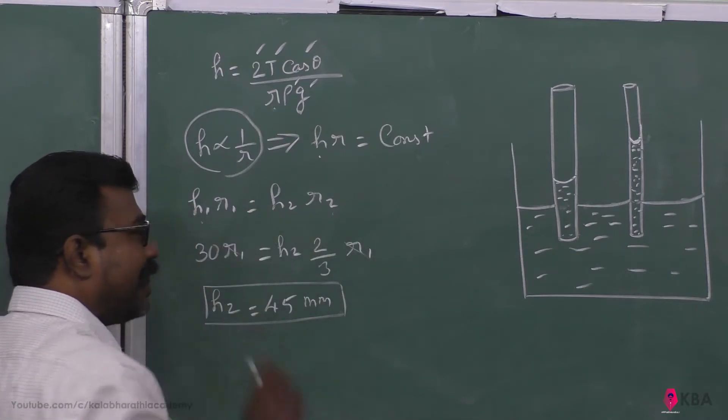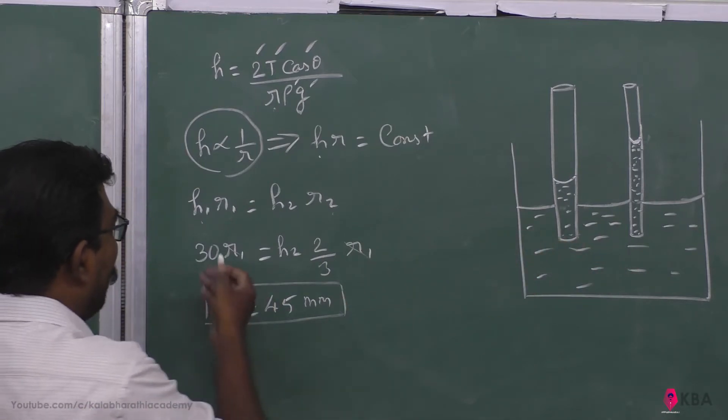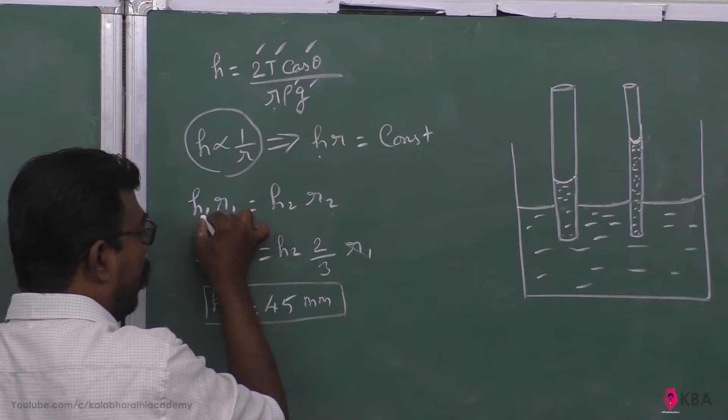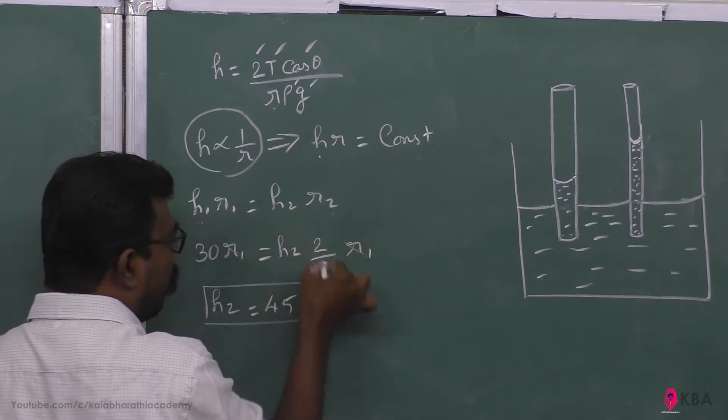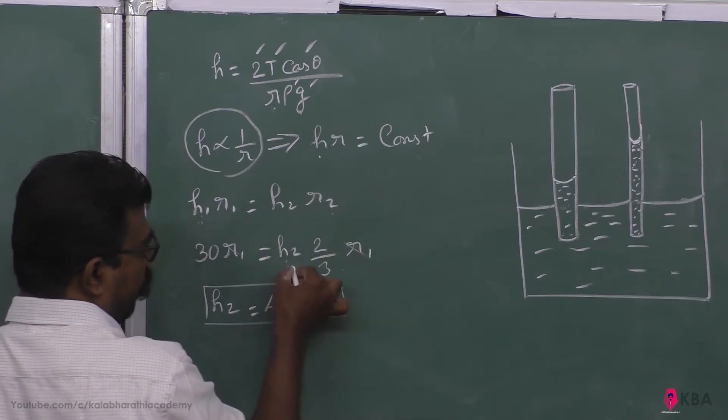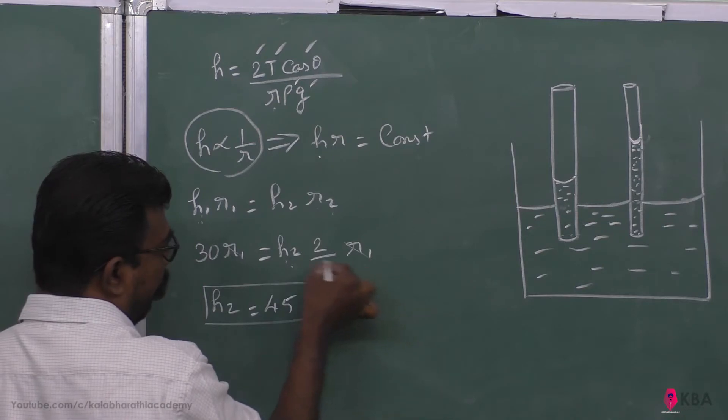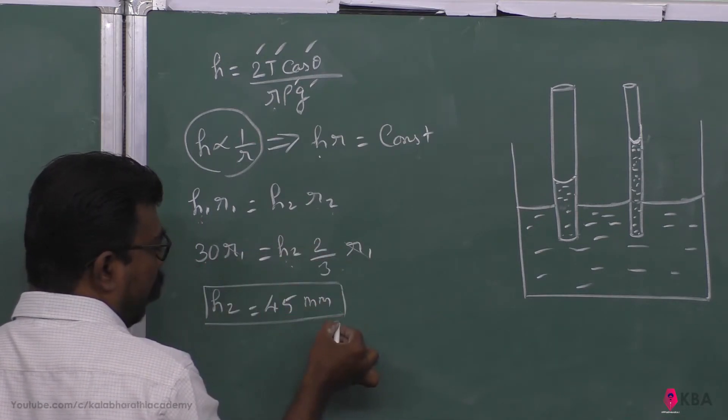If you understand this, this is substitution. Now you can substitute h1 is 30 mm for r1, and r2 is equal to two-thirds r1. H2 is equal to 3 into 30 divided by 2, 45 mm.